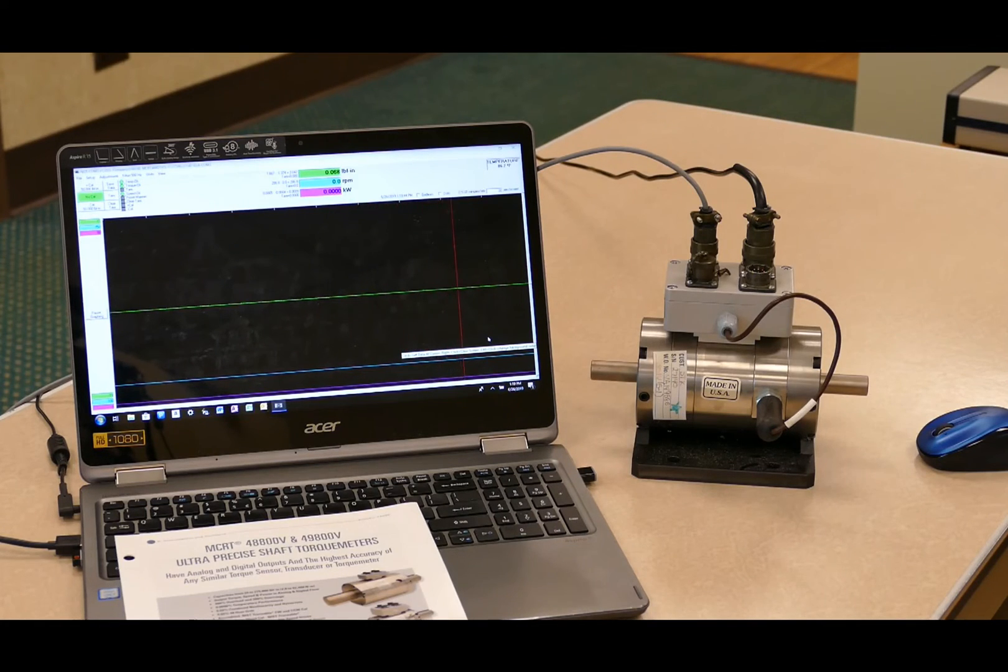Units are available in standard accuracy configuration of plus or minus 0.04% of full scale and also in enhanced accuracy configuration of plus or minus 0.02% of full scale. They also feature superb temperature compensation and temperature performance, minimizing any impact of temperature change during a test on the output signal.